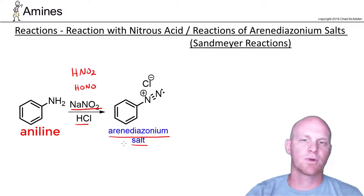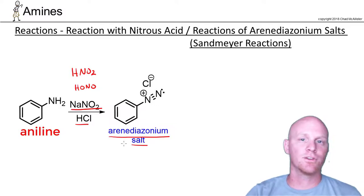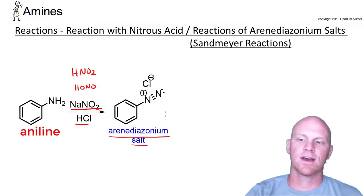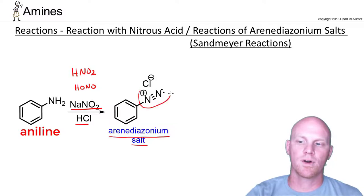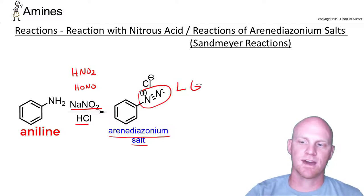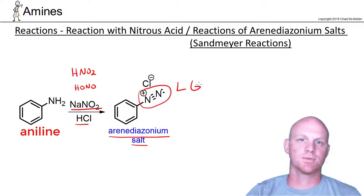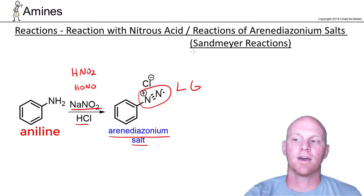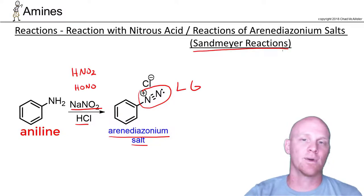If we used just a normal primary amine it wouldn't form anything stable — it would actually decompose before you could do anything with it. But with aniline we get this arene diazonium salt, and the big important part is that that species is a fantastic leaving group. It's going to leave as nitrogen gas, and we can replace it with a whole host of different nucleophiles in what are termed the Sandmeyer reactions.